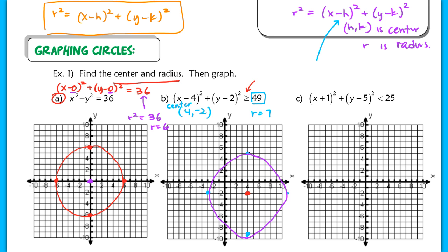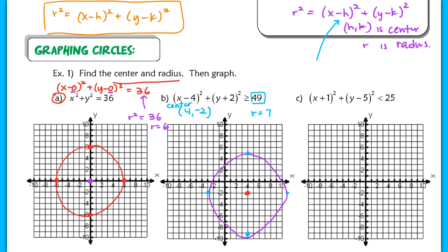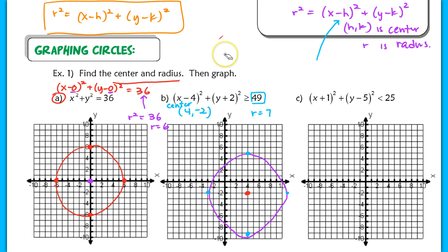Now we have to think about how to shade it. Pick a specific point to test to determine whether to shade on the inside or outside of the circle. The circle represents a boundary. Points that satisfy the inequality are on one side; those that don't are on the other.